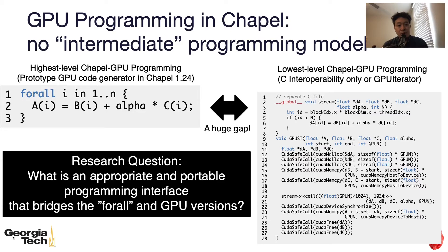However, when it comes to GPU programming in Chapel, the current Chapel has only two ultimate approaches. One approach is on your left, which is a compiler-based automatic GPU compilation approach where the compiler compiles forward loops to GPUs. Also, the approach on your right is a purely manual approach, where the user writes a full GPU program and invokes it from Chapel.